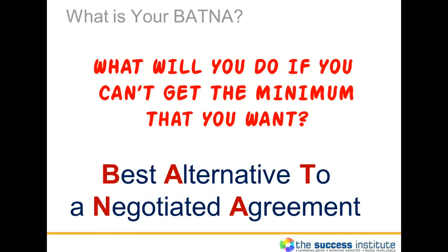The most important question to ask is: what will you do if you can't get the minimum that you want from your negotiation? If you have some alternatives, then you have a strong BATNA. Too often people give away too much or give in too soon by not having a BATNA. It's always important to know what you'll do if you can't get your minimum.